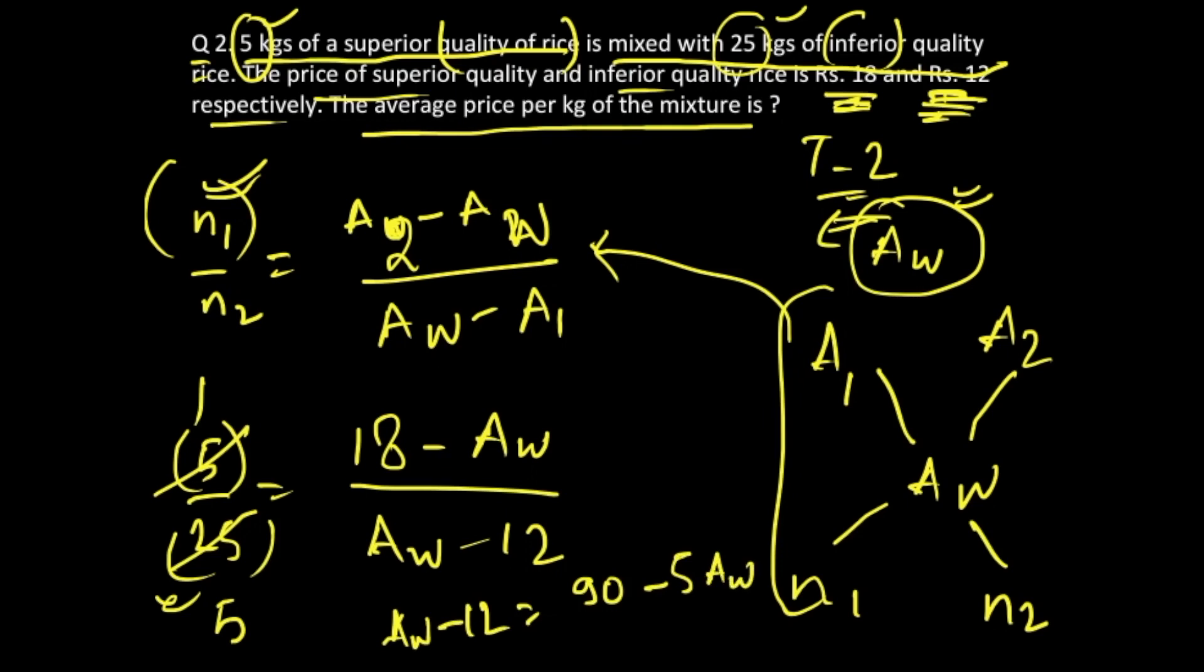Take this over there and your equation becomes 6 times AW equal to 90 plus 12, which is 102. So you solve it for the value of the weighted average: 6 times 17, so 17 becomes your answer. This is how you solve these type of questions in which AW is unknown to us.